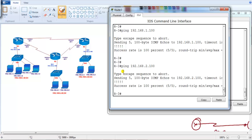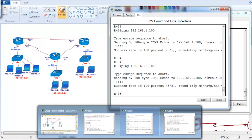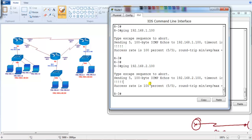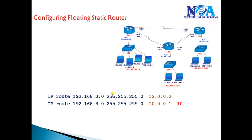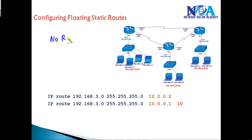Once we are done with static routing, the next thing we'll do is verify some of the other advanced options of static routing. We call them floating static routes. One of the major drawbacks with normal static routing is that everything has to be manually configured by the administrator, and at the same time there is no redundancy in general.